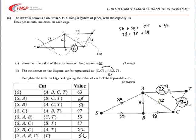The marking for these parts of the question was a simple B1 mark for the first part, and then a B1 mark for each of the totals that we had to fill in.